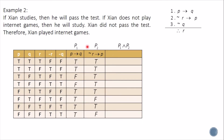We combine premise one and premise two using conjunction. Then we combine that result with premise three, not q, also using conjunction. The resulting column values are: false, false, true, false, and the remaining rows are false — giving us mostly false values with one true.